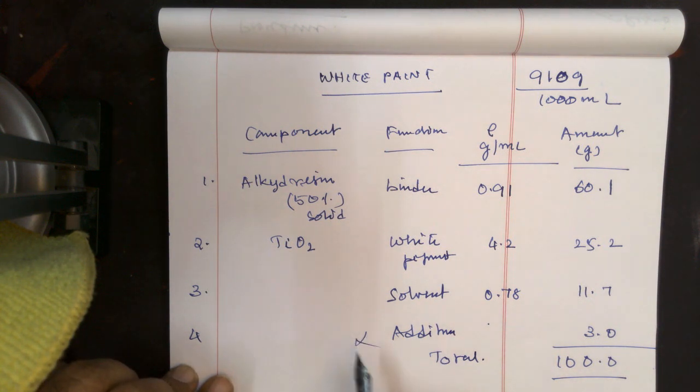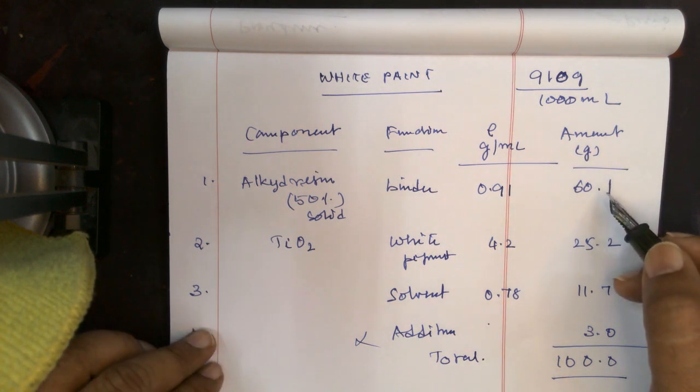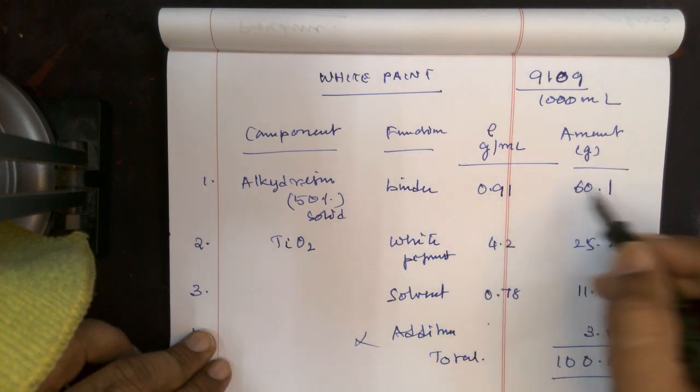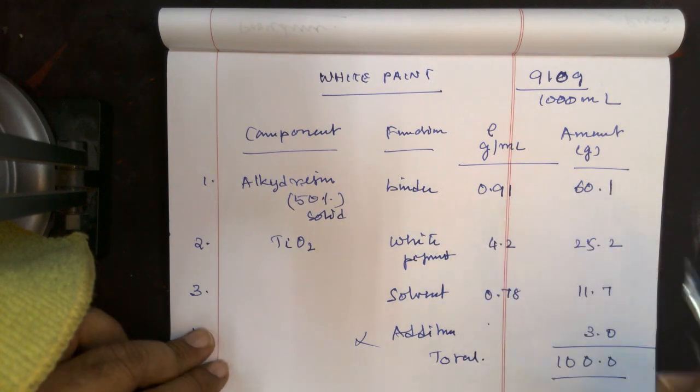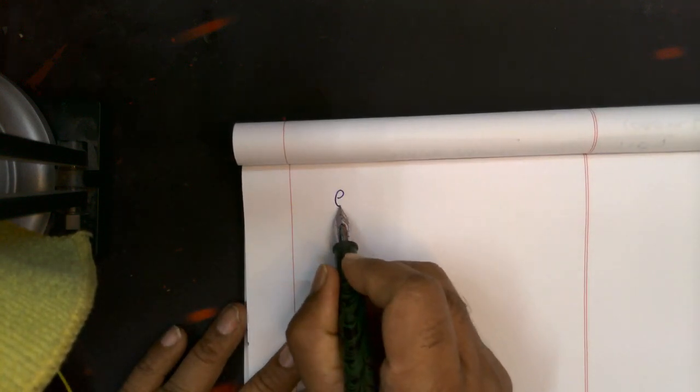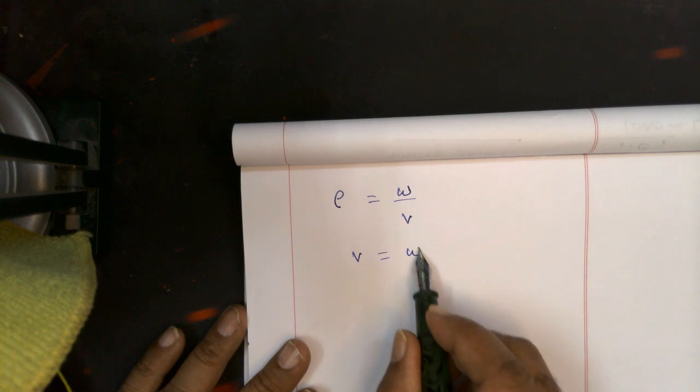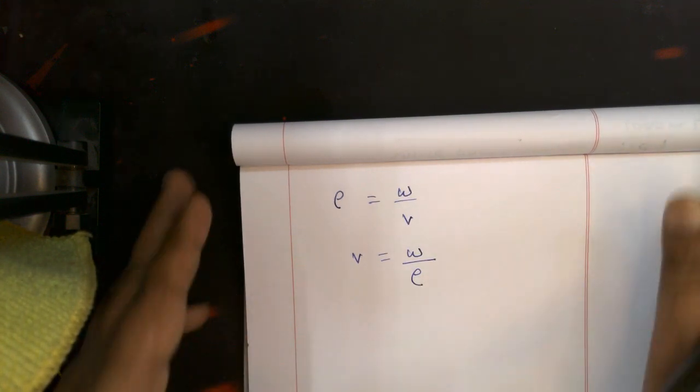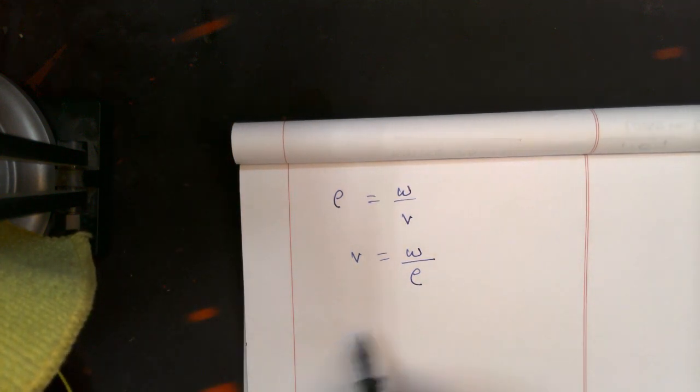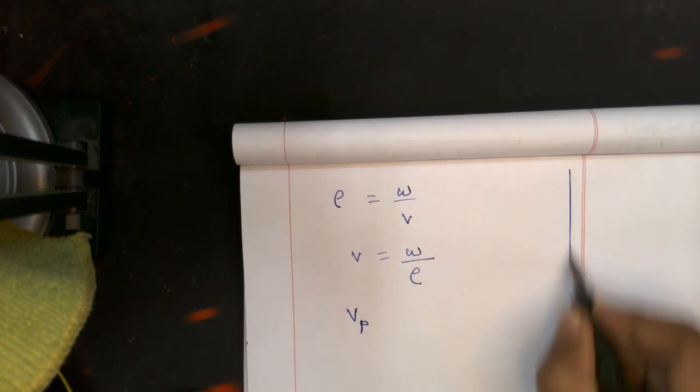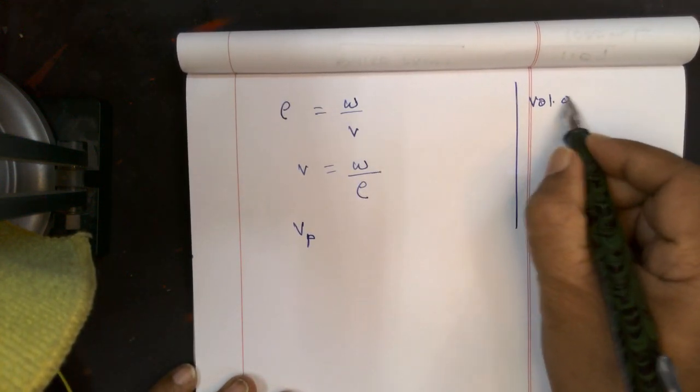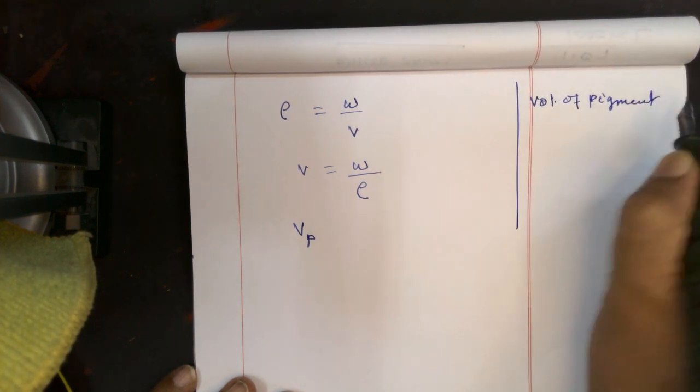So for the total 100 grams of the paint, the titanium is 60.1. We are interested to find out the volume. Density ρ is equal to weight by volume. We are interested in calculating the volume, therefore V = W/ρ. We are going to calculate the volume of the pigment Vp, that is volume of pigment.